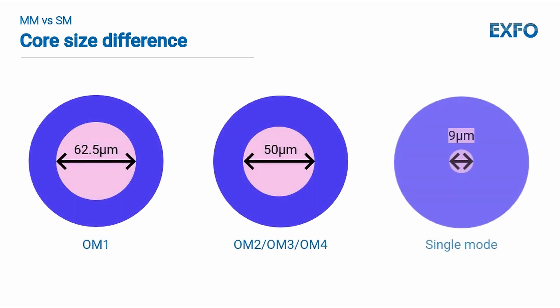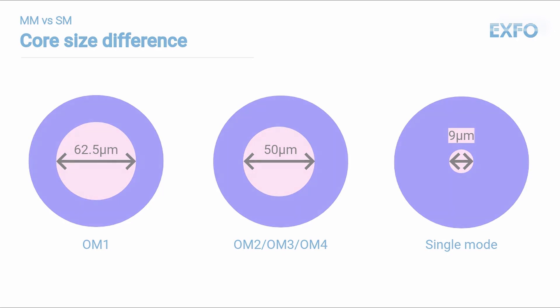The much larger core diameter, usually 50 or 62.5 microns, can carry multiple light rays or modes at the same time, whereas single-mode fibers carry only a single mode of light and have a much smaller core diameter, usually 9 microns.